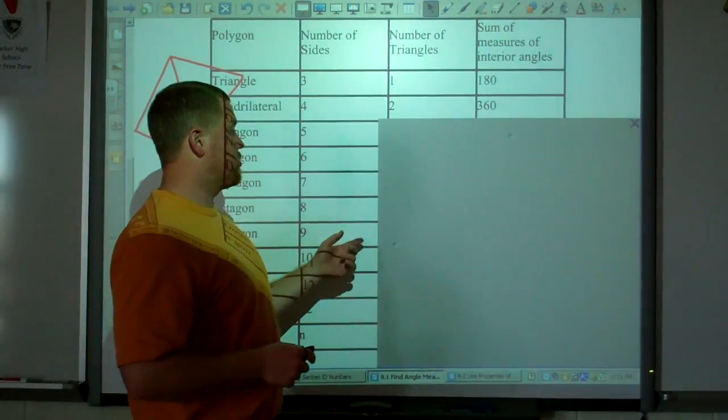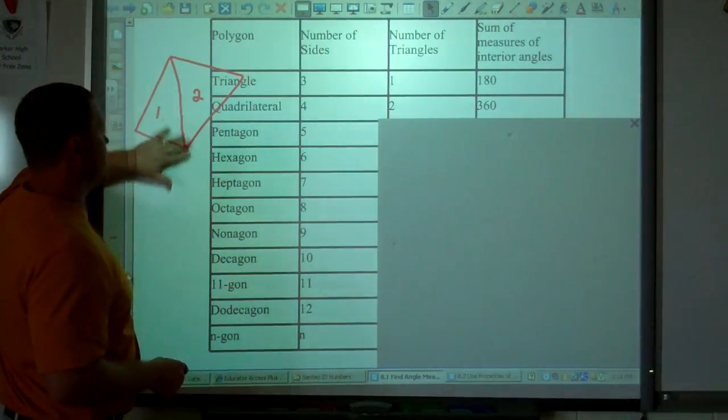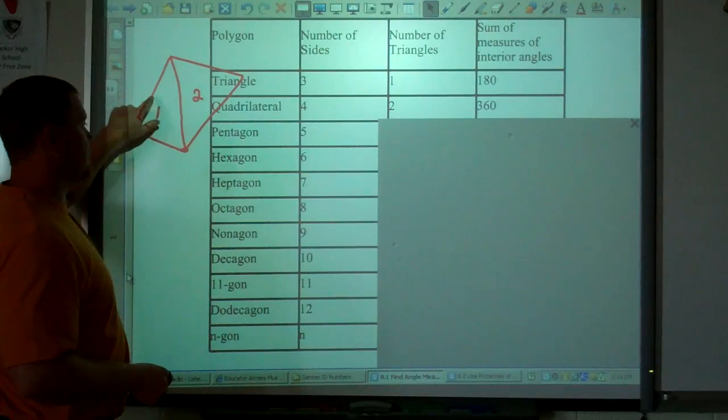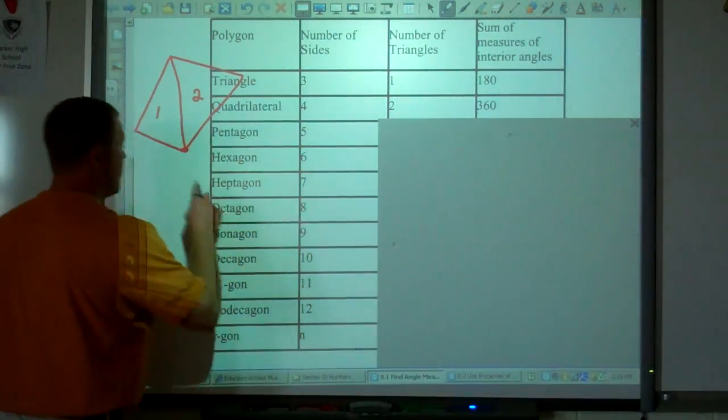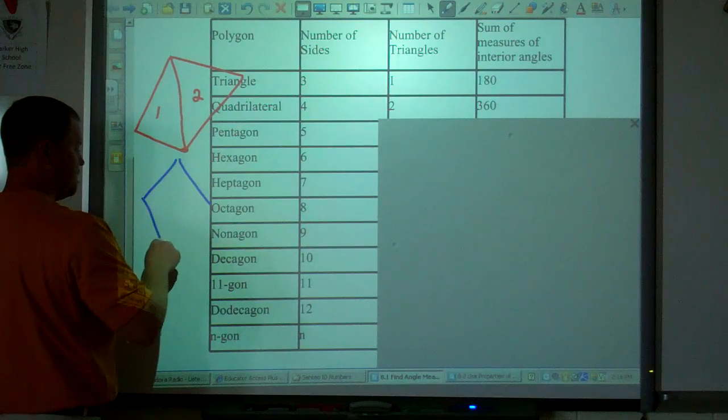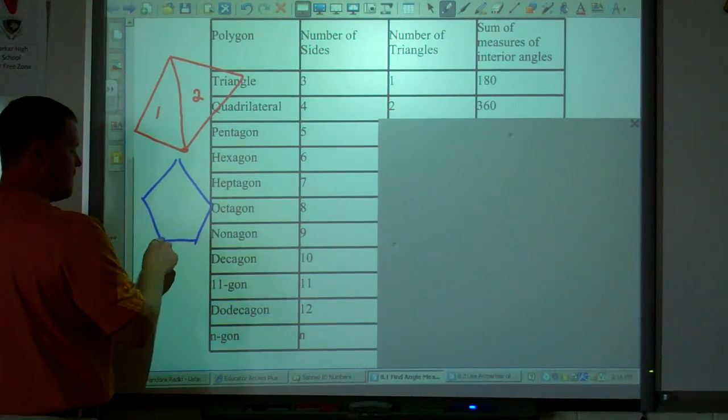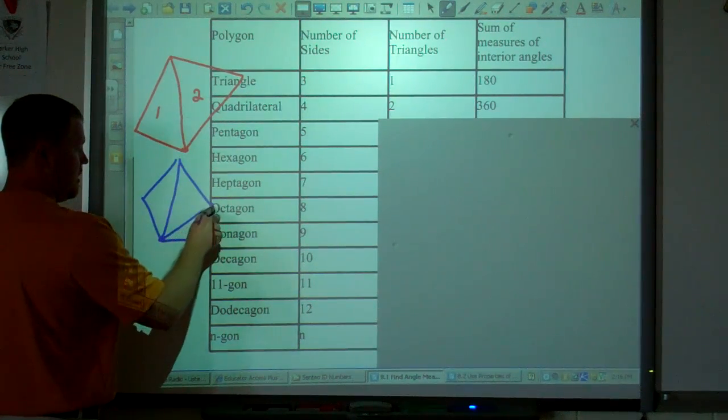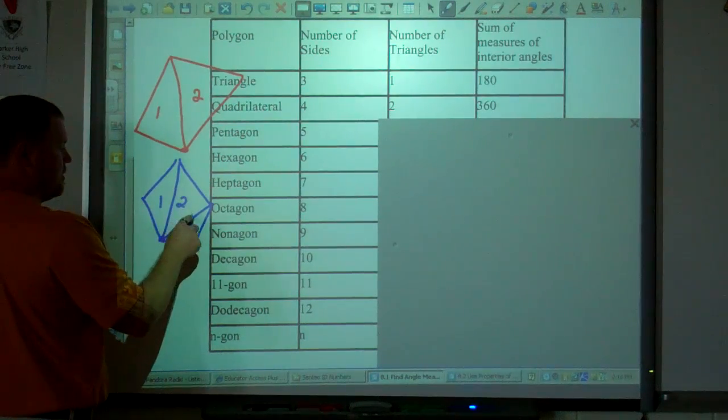Pentagon. The number of triangles. So again, you're drawing your diagonals from the same vertex, and how many triangles do you end up with? So you have a pentagon. From this vertex, if I draw that, there are my diagonals. One, two, and three triangles.